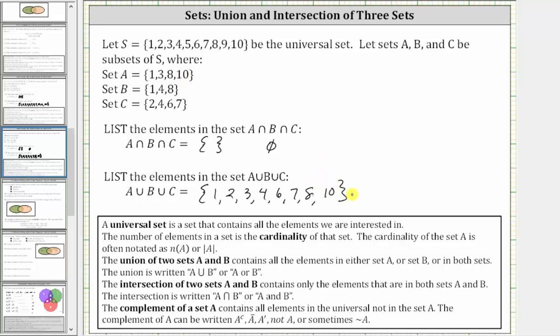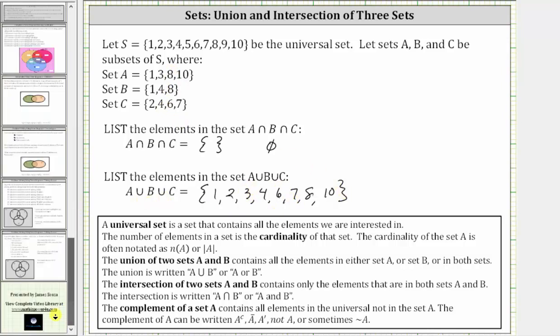These are the elements in set A, or set B, or set C, or in two or three of the sets. And therefore this is A union B union C. I hope you found this helpful.